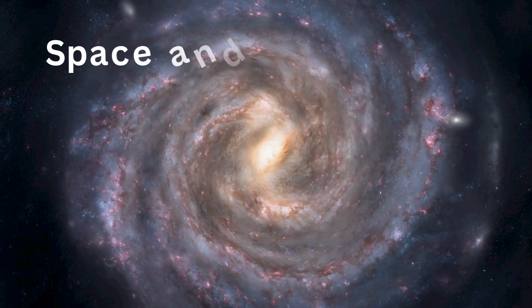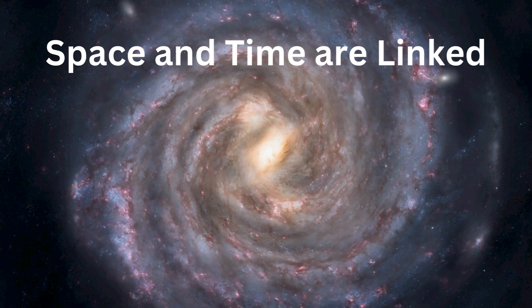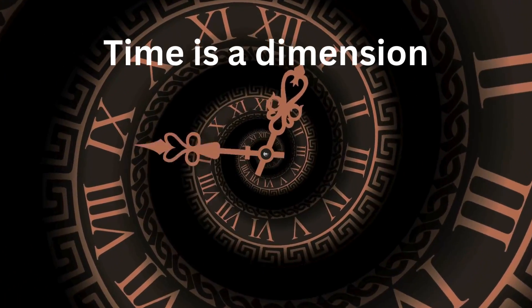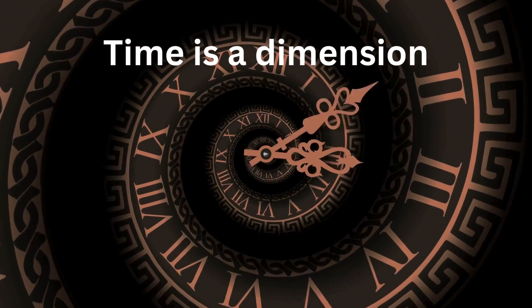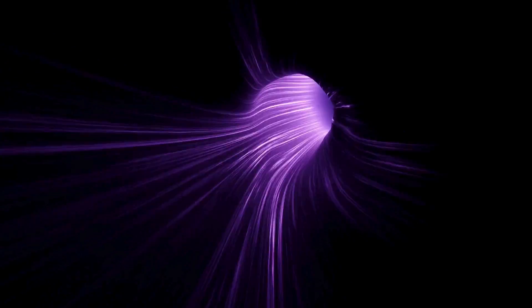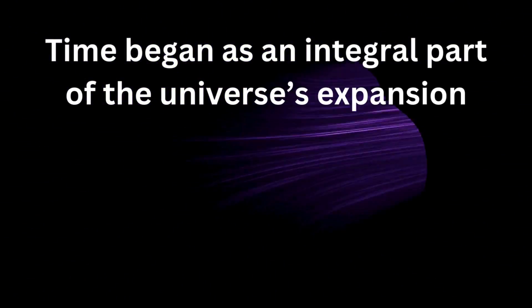Space and time are linked. In the Big Bang model, time and space are intertwined. As the universe expanded, so did time. You can think of time as a dimension, similar to the dimensions of space. As the universe expanded, time started to flow along with space. So, time began as an integral part of the universe's expansion.